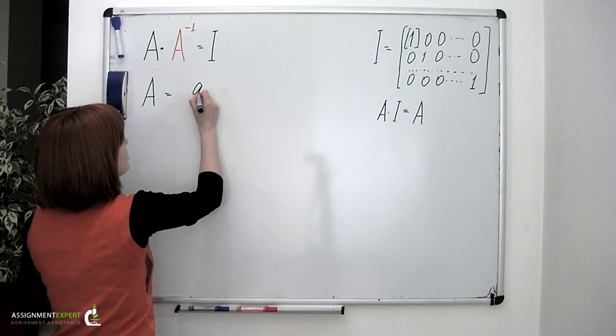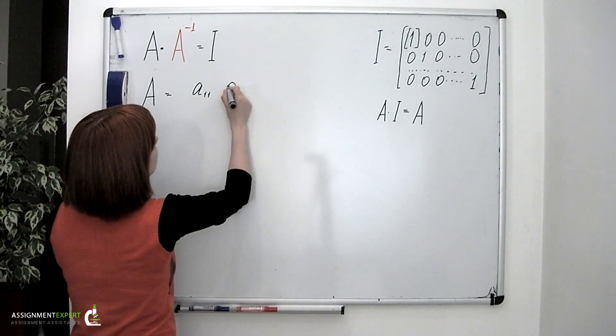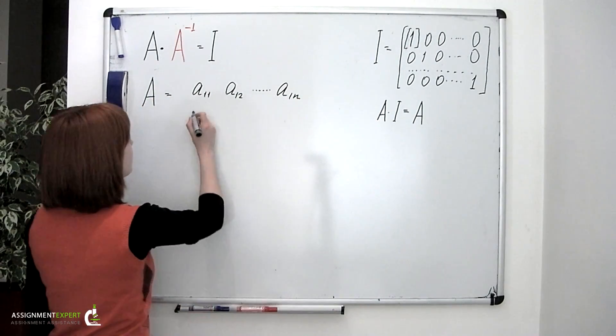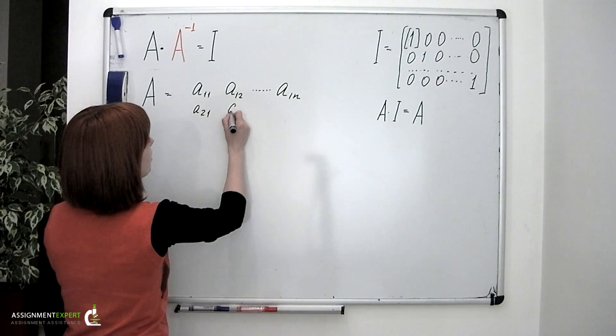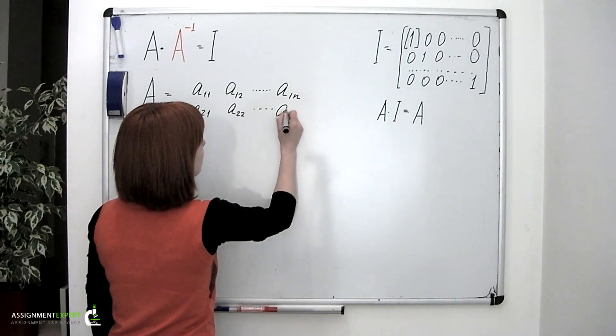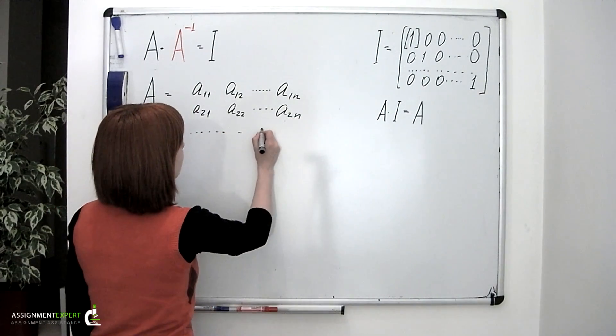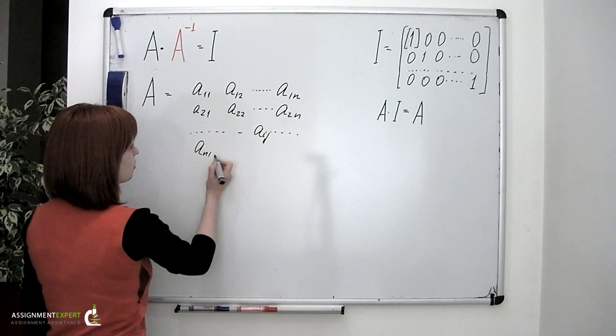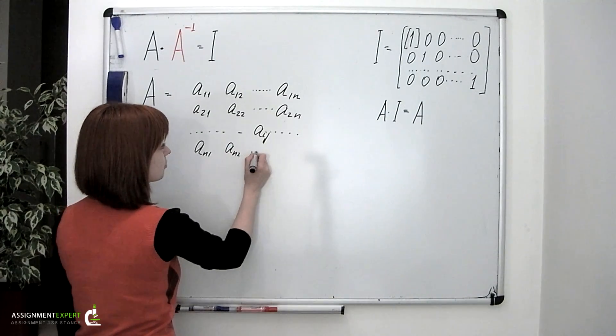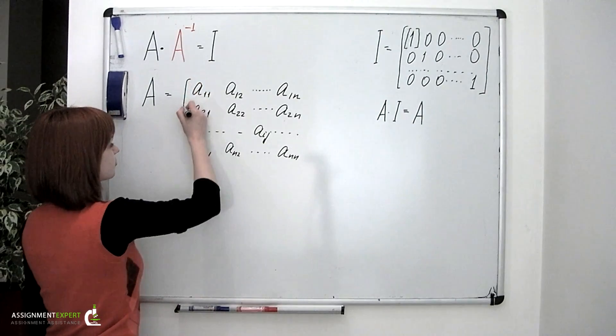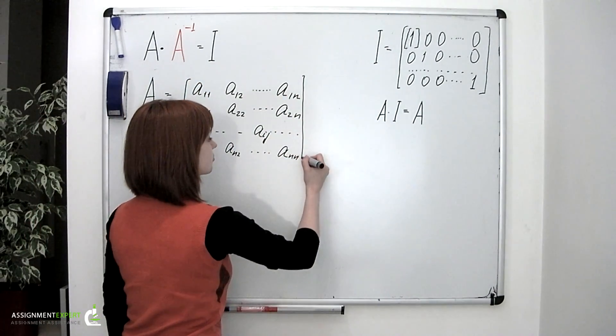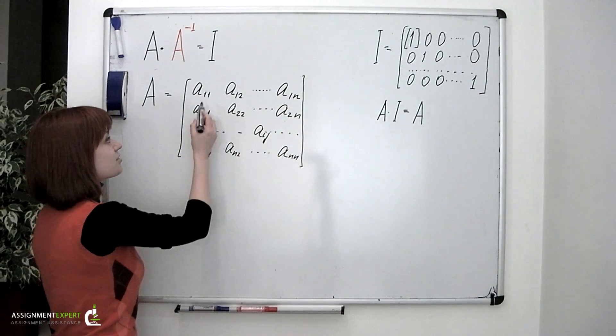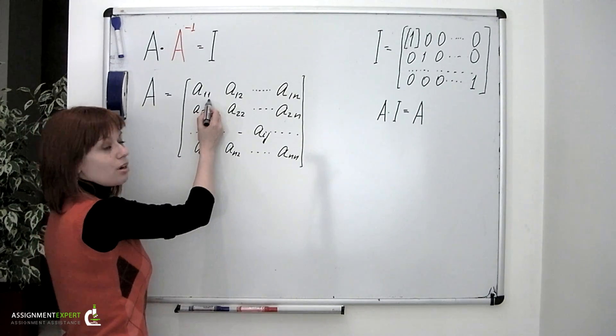It has n rows and n columns, with elements a_11, a_12, a_21, a_22, up to a_ij, and finally a_n1, a_n2, through a_nn. As you can remember, the first number in the index of the element stands for the number of the row, and the second number stands for the number of the column.